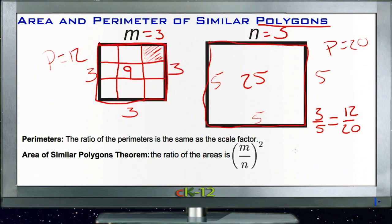You just take the scale factor, in this case three out of five, or three-fifths, and you square the entire scale factor. So you square the top, three squared is nine, and you square the bottom, five squared is 25.